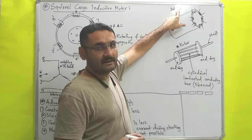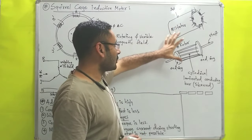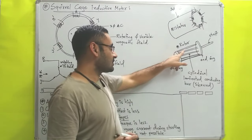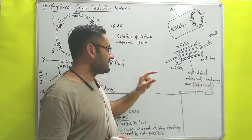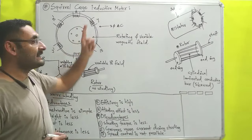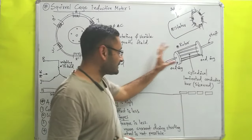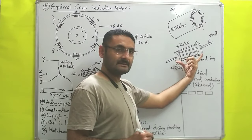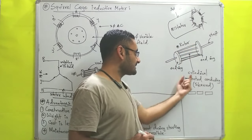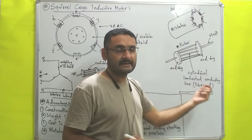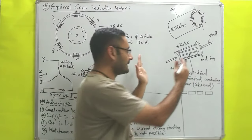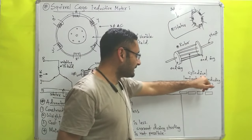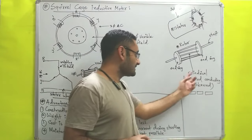To that stator we are supplying three-phase alternating current. That is all about the stator. Now we will continue with the next part which is known as the rotor. Here we are using a squirrel cage rotor. This type of rotor has two end rings, and between those two end rings, cylindrical laminated conducting bars are short-circuited.